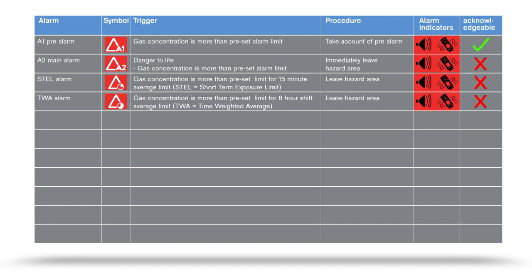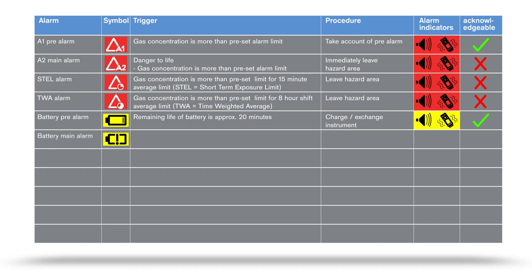The battery pre-alarm is triggered when the device battery has approximately 20 minutes remaining. The battery main alarm signals that the battery has reached the end of its capacity. The device then switches off automatically after a few seconds.